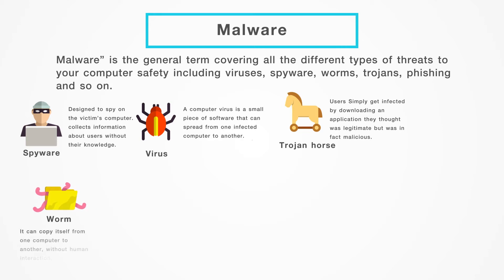Computer worm: A computer worm is a software program that can copy itself from one computer to another without human interaction. Worms can replicate in great volume and with great speed. For example, a worm can send copies of itself to every contact in your email address book, and then send itself to all the contacts in those address books as well.